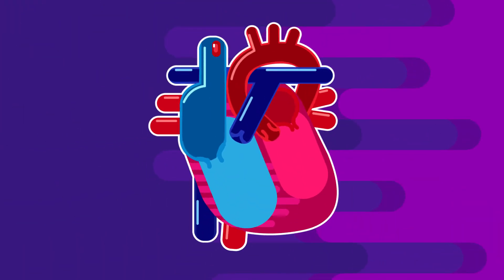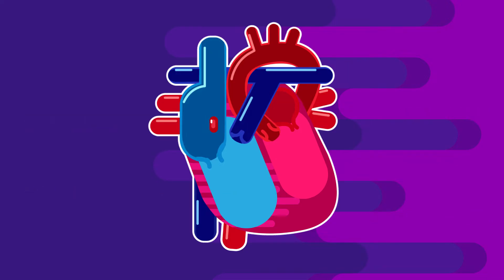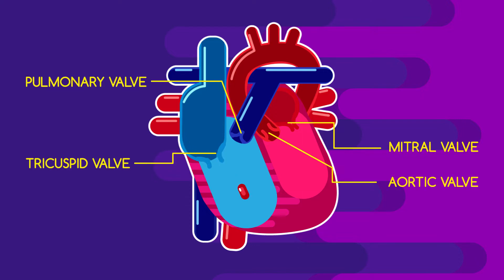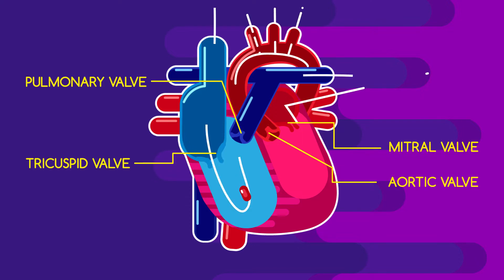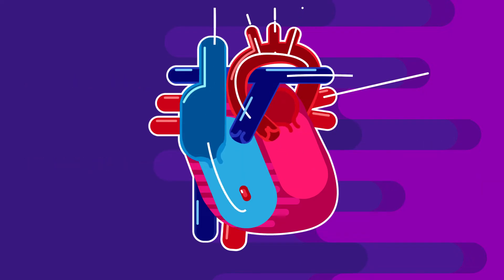The deoxygenated blood has arrived at the heart. Remember that the heart has four chambers: the right atrium, the right ventricle, the left atrium, and the left ventricle — each with its own specific role. These chambers are separated by valves, which act as floodgates, ensuring that blood only flows in one direction, travelling back from all around our bodies.